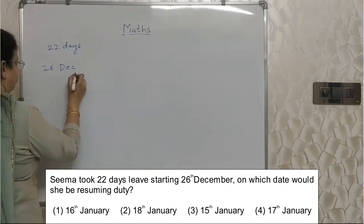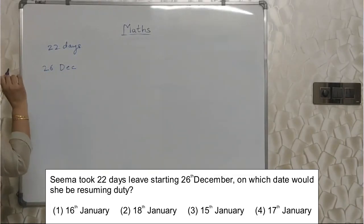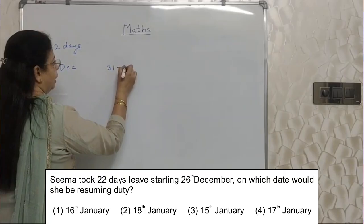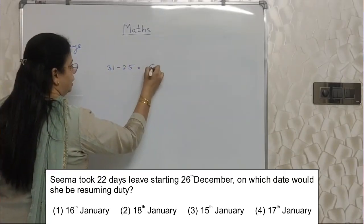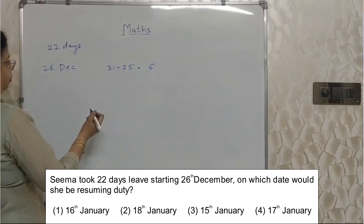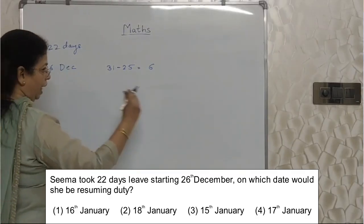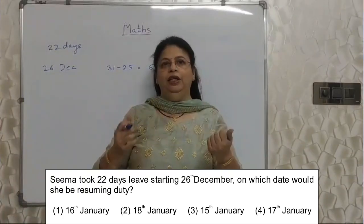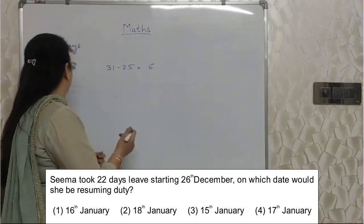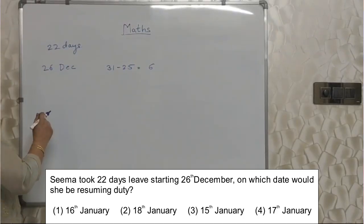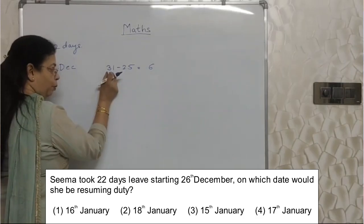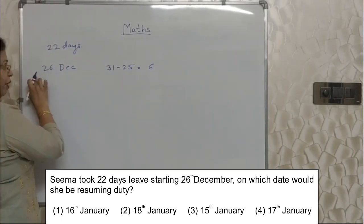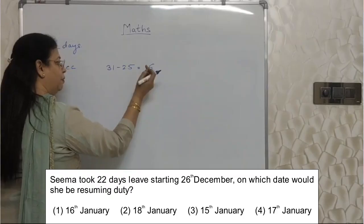From 26th means up to 25th she was working. Total days of December are 31, and she was not on leave up to the 25th. So 31 minus 25 equals 6 days of December she was on leave. You can also count: 26th, 27th, 28th, 29th, 30th, 31st — that's 6 days. But if the start date is in the middle of the month, this subtraction method is very useful. The total days of that month, minus the day before the leave started, gives you the remaining days on leave.